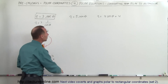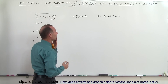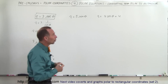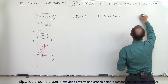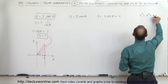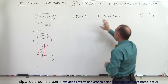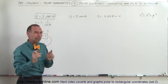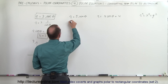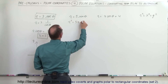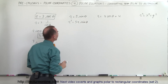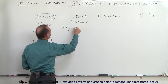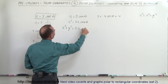On the next equation, we have r equals 5 times the sine of theta. How do we convert that to Cartesian or rectangular coordinates? You have to remember the definition that r squared equals x squared plus y squared. So we need to somehow turn the equation into an r squared, and then we can convert to x's and y's. We're going to multiply both sides by r. Doing that, we get r squared on the left equals 5r times sine of theta on the right.